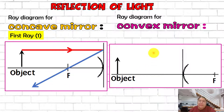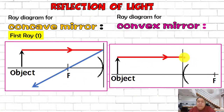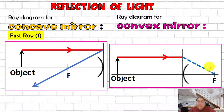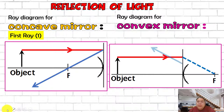For the convex mirror, the first ray is also parallel, but remember it reflects away from F - it diverges from F. So you must first draw a continuous line extended to F behind the mirror, then from F the ray diverges, making the arrow go to a wider area. This is the first ray for the convex mirror.